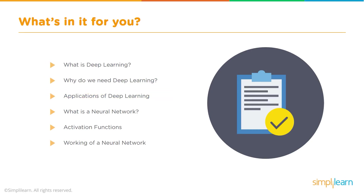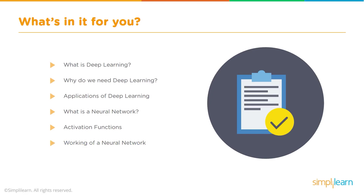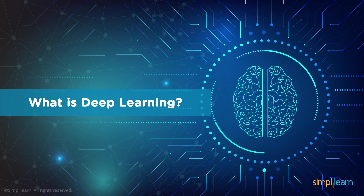One of the main components, the secret sauce in deep learning, is neural networks. So we are going to talk about what a neural network is and how it works, and some of its components like the activation function, the gradient descent, and so on. Without much further ado, let's get started.